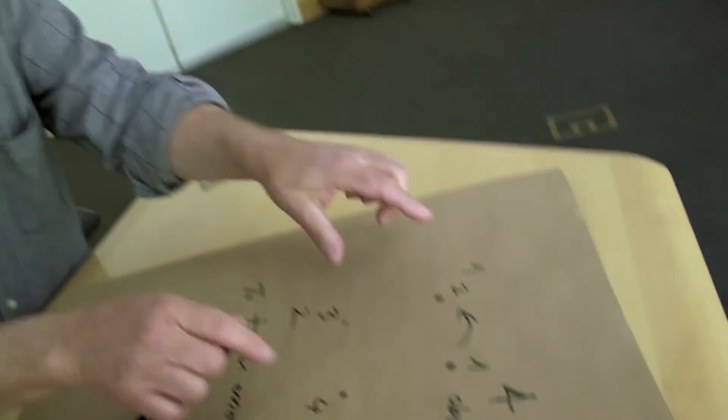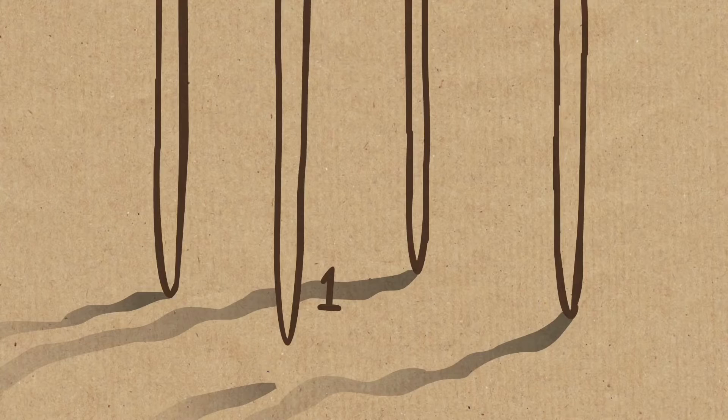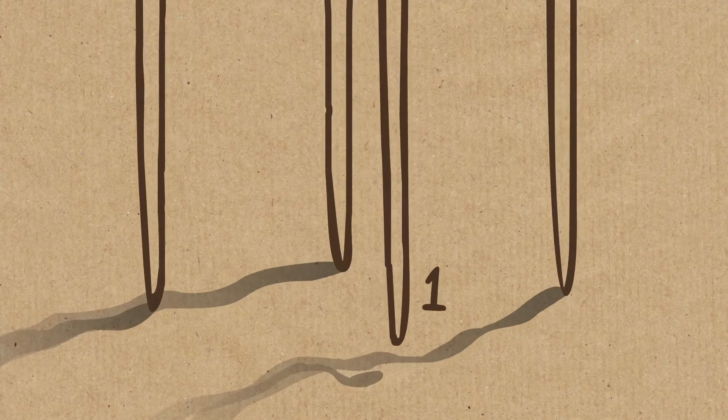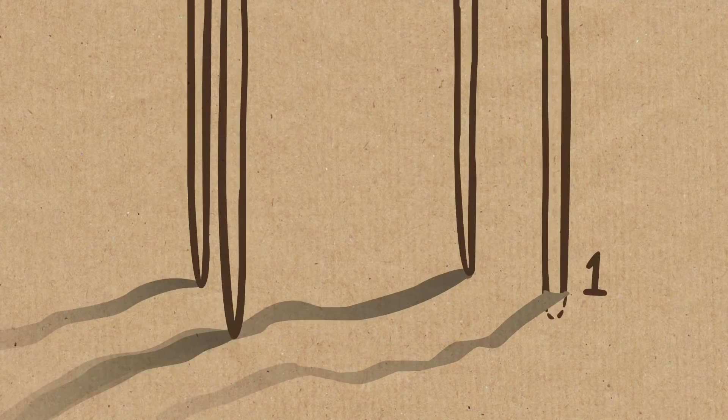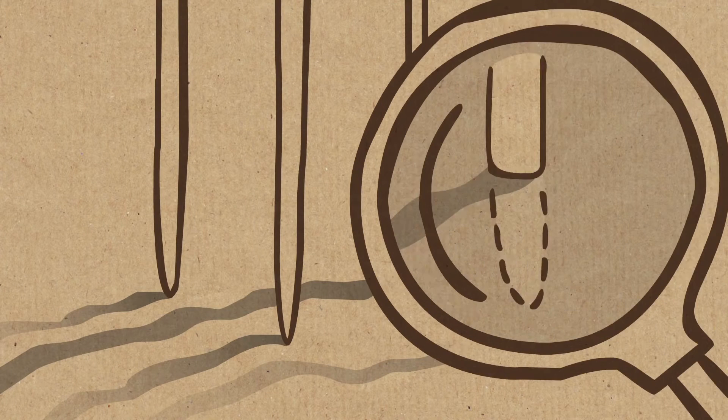And now we force these three to be on the ground. That means this position has to be under the ground. You see that if you, before you have fixed these three, it's above. Now you force this to go down and up. This is suddenly under the ground.